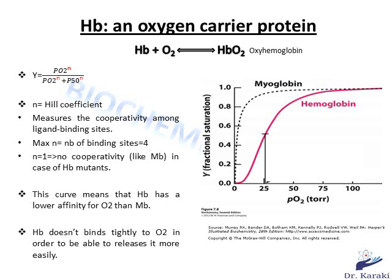Looking at the oxygen-binding curve of hemoglobin, the shape is different from myoglobin — it is sigmoidal rather than hyperbolic. The p50 of hemoglobin, obtained at Y = 0.5, is 26 torr, much higher than myoglobin's 4 torr. Since a lower p50 corresponds to higher affinity, hemoglobin has a lower affinity for oxygen than myoglobin, consistent with its role as an oxygen carrier that must release oxygen easily to tissues.